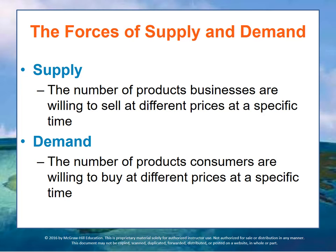Supply is the number of products — goods and services — that businesses are willing to sell at different prices at a specific time. In general, because the potential for profits are higher, businesses are willing to supply more of a good or service at a higher price. There's less risk when the price is higher; you can incur a little bit of extra cost if you have to produce more than you might have on hand. So suppliers — producers — are willing to produce more and supply more if the prices are higher.